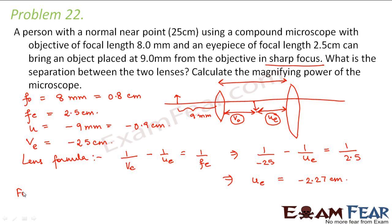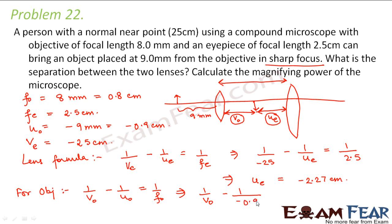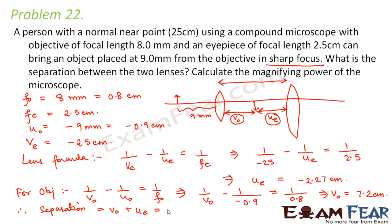Now applying the lens formula for the objective: 1/VO − 1/UO = 1/FO, which gives 1/VO − 1/(−0.9) = 1/0.8. Solving this, VO = 7.2 cm. Therefore, the separation between the lenses is VO + |UE| = 7.2 + 2.27, which comes out to be 9.47 centimetres.